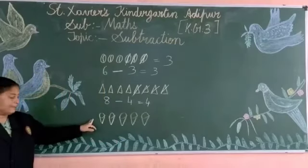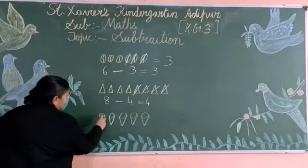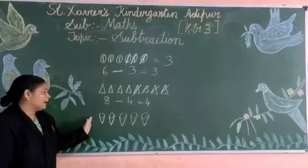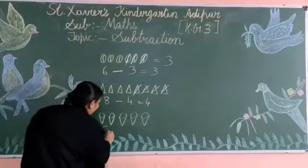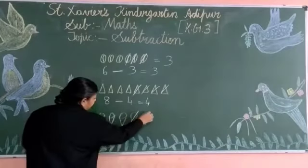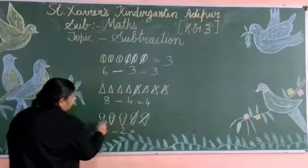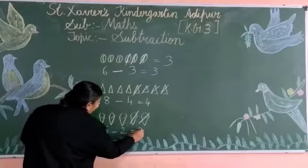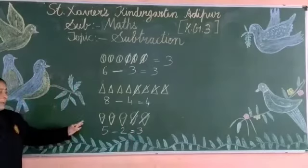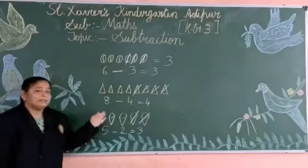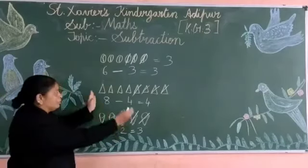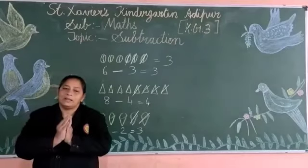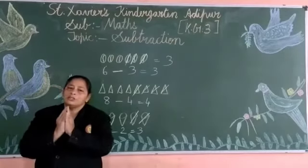Now look here — ice cream sticks. Count the ice creams first. 1, 2, 3, 4, 5. How many ice creams are there? 5. Now you have to cut 2 ice creams. 1, 2. How many remain? 1, 2, 3. How many are remaining? 3. So subtraction yanni kya hai? Jo bhi aapke paas hoga, us mein se jo bhi kum ho jayega, phir count karna hai. Jo kum hote jayenge, usko subtraction bolte hain.